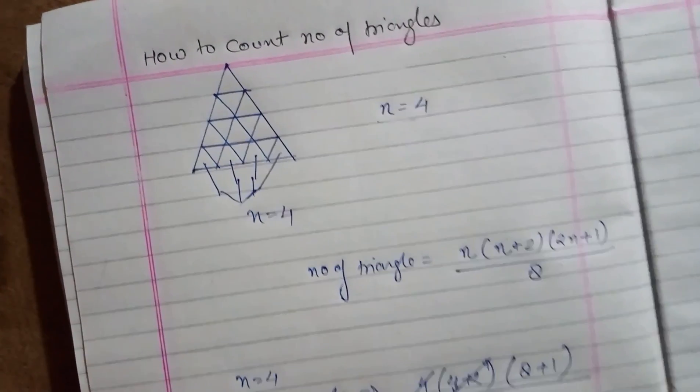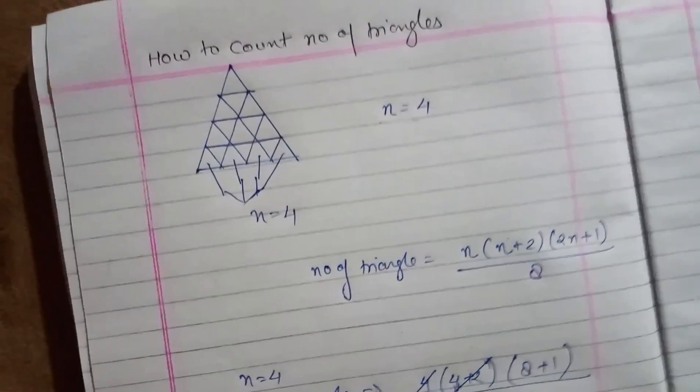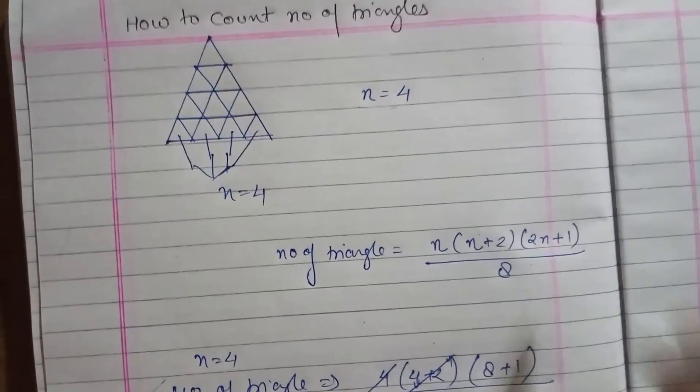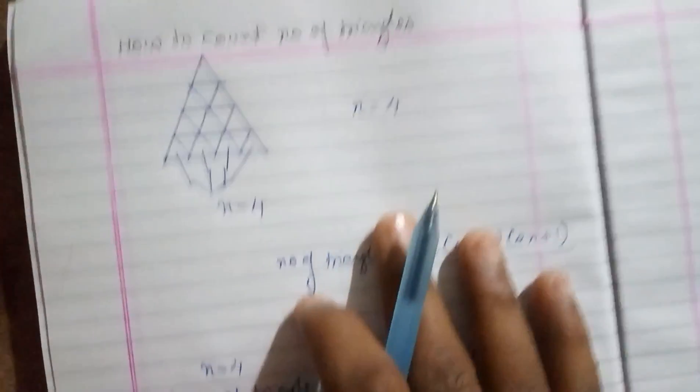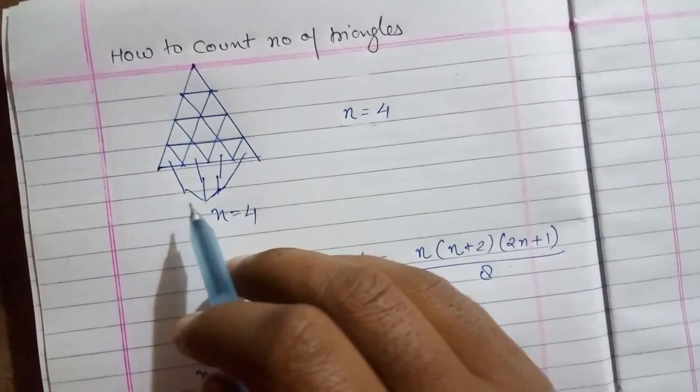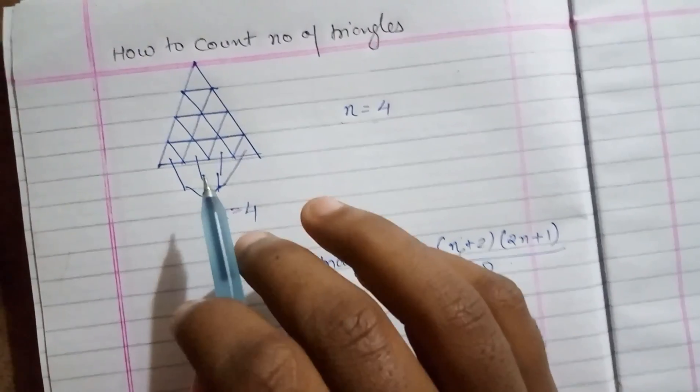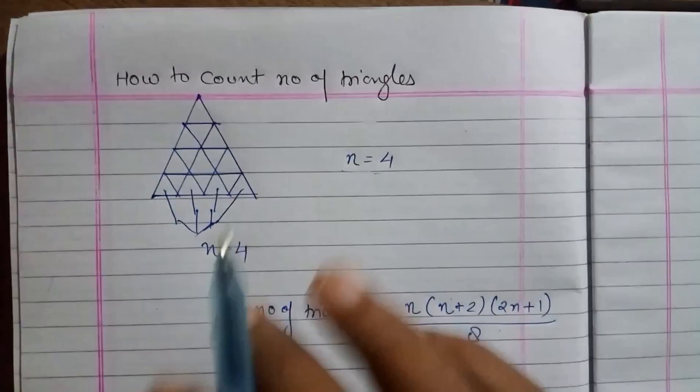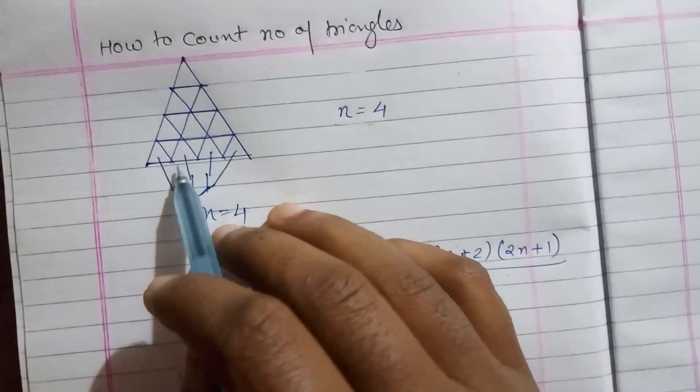It is time-consuming plus you can never be so sure, right? So I have a formula for you guys. By using the formula you can calculate number of triangles very easily and fast.